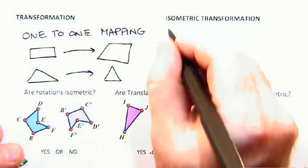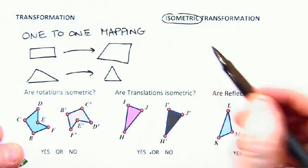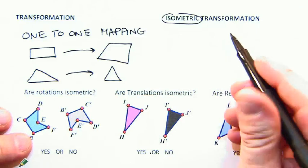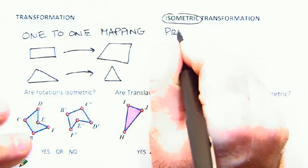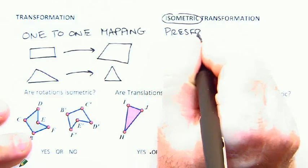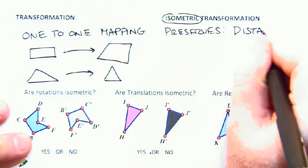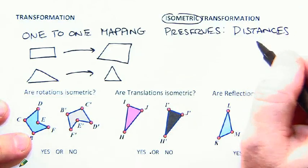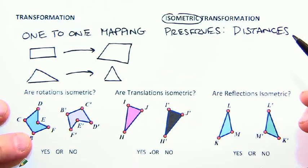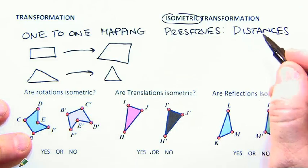Now, isometric is a much more specific type of transformation. And we like this one even better because when we do an isometric transformation, it preserves a number of things. It preserves distances. What I mean by that is that when we move the shape using an isometric transformation, the distances of the original vertices will all be the same. They're all going to be the exact same distance away.